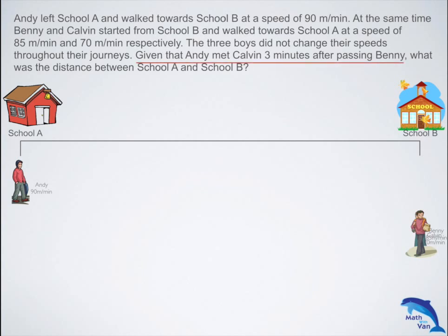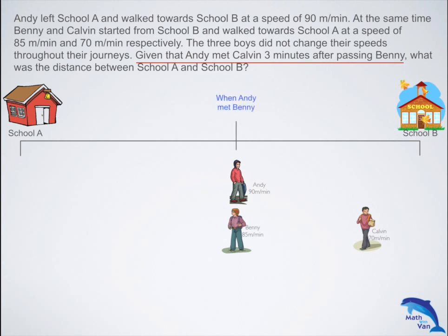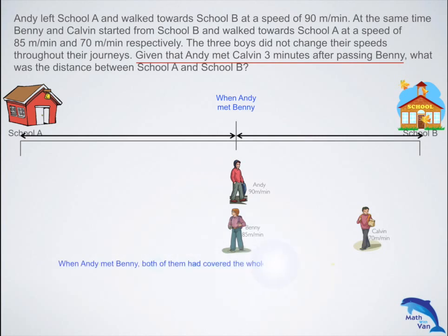Given that Andy met Calvin three minutes after passing Benny, Andy met Benny first. As you can see, this is the distance covered by Andy and this is the distance covered by Benny. When you add up these two distances, you realize it's actually the distance between the schools. We know that this is the difference in distance between Benny and Calvin — Benny was some distance ahead of Calvin because he was faster.